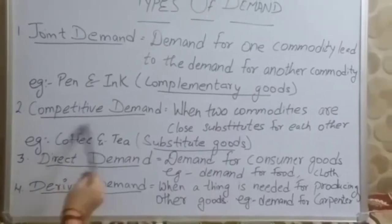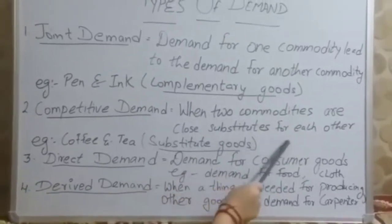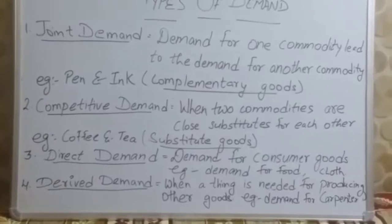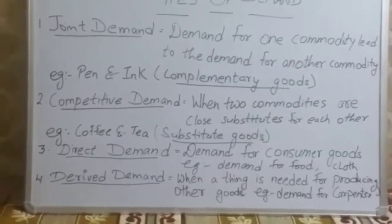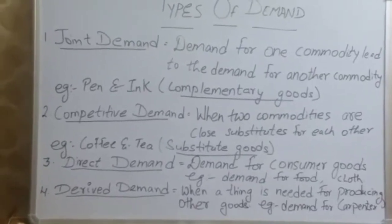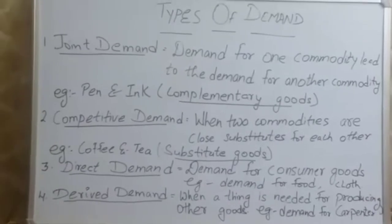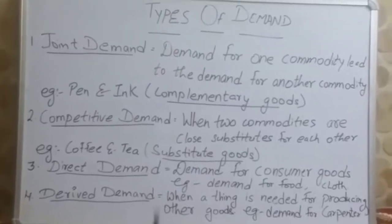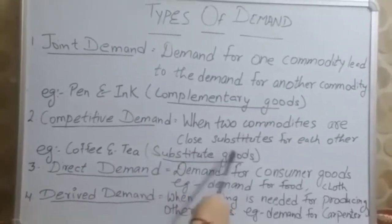The second type is competitive demand — when two goods are close substitutes for each other. For example, tea and coffee. When the price of coffee rises, the demand for tea will increase. Because coffee becomes expensive, people switch to tea. That is why we call it competitive demand. In economics, these types of goods are called substitute goods.